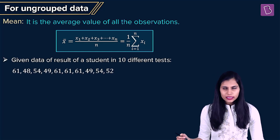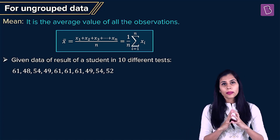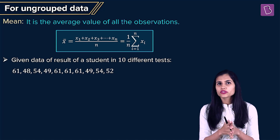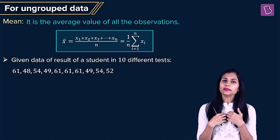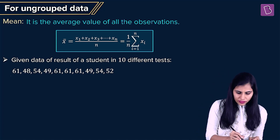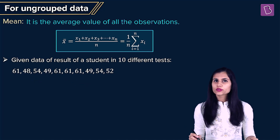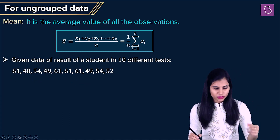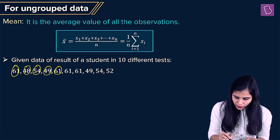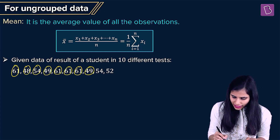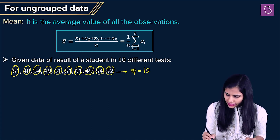For example, let me consider the exact same data set consisting of the marks obtained by a particular student in 10 distinct tests. I am supposed to find the mean of this ungrouped data. Step one is going to be to count the number of observations: one, two, three, four, five, six, seven, eight, nine, ten. That means the number of observations, the value of n, is 10.